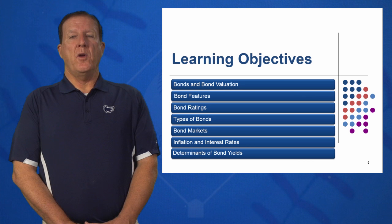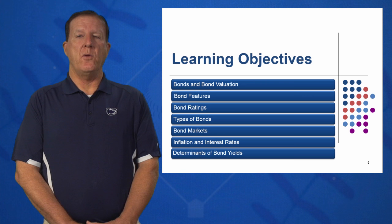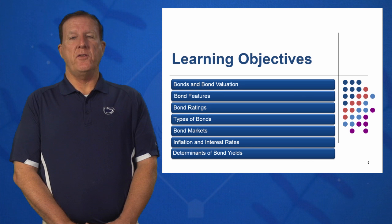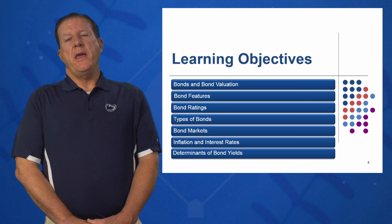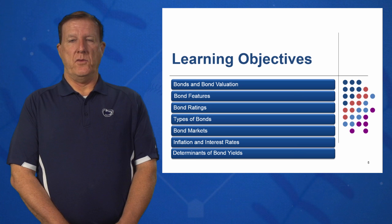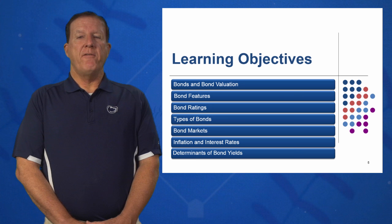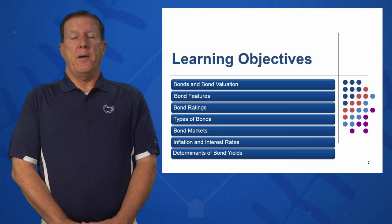Learning objective four: what are different types of bonds, and how do we calculate their value? Learning objective five: where do we buy a bond — is there a store downtown or do we go elsewhere? In objective six, we look at inflation and interest rates — how do interest rates affect bond values? As interest rates go up, bond values go down, and we'll learn mathematically why. Finally, objective seven: what determines bond yields? Essentially it's a breakdown of the Fisher effect.